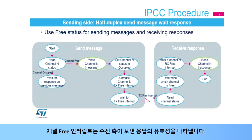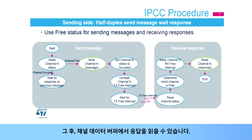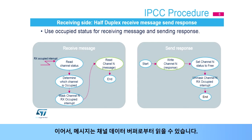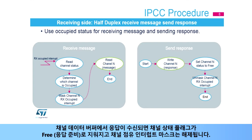The channel-free interrupt indicates the availability of the response sent by the receiving side. When a channel-free interrupt, or response ready, is generated, the sending side determines which channel is freed and masks the corresponding channel-free interrupt. Subsequently, the response can be read from the channel data buffer. When a channel-occupied interrupt, or message available, is generated, the receiving side determines which channel is occupied and masks the corresponding channel-occupied interrupt. The message can then be read from the channel data buffer. The channel will only be freed once the receiving side has sent the response to the channel data buffer. Once the response is in the channel data buffer, the channel status flag is cleared to free, or response ready, and the channel-occupied interrupt is then unmasked.